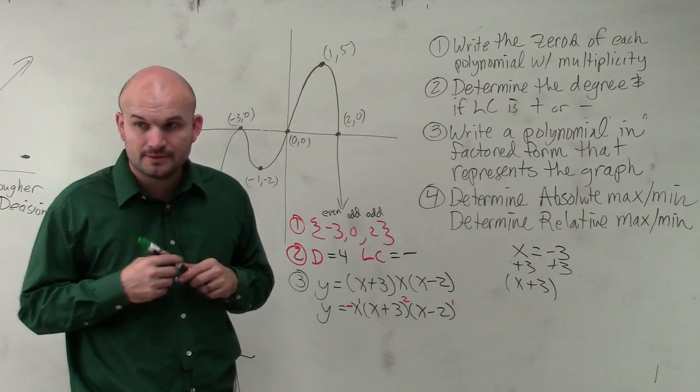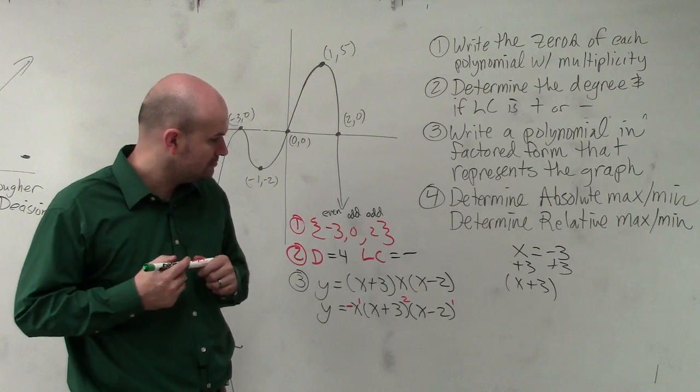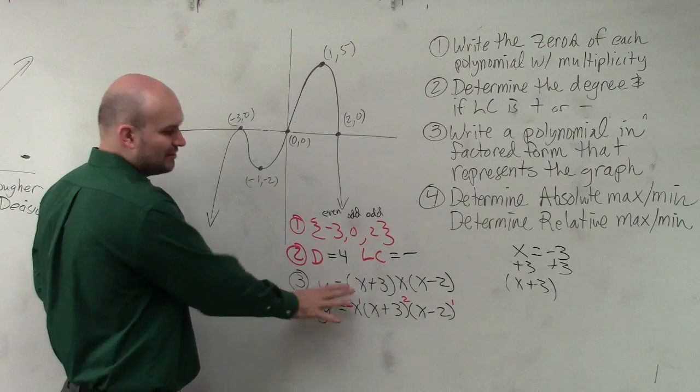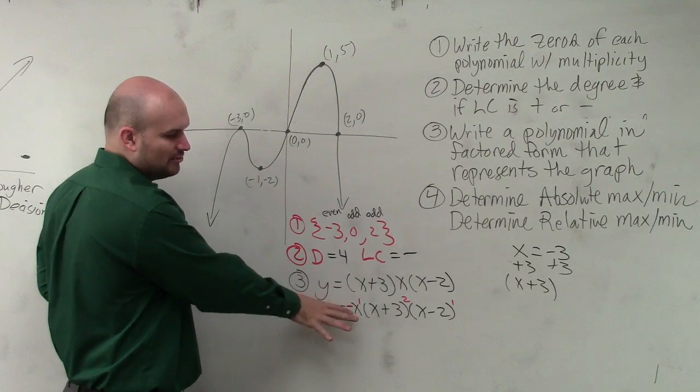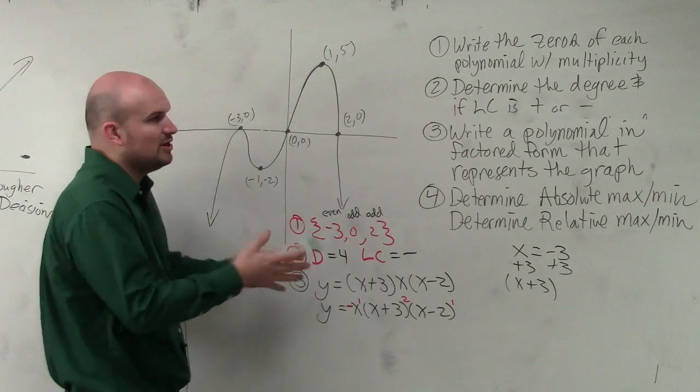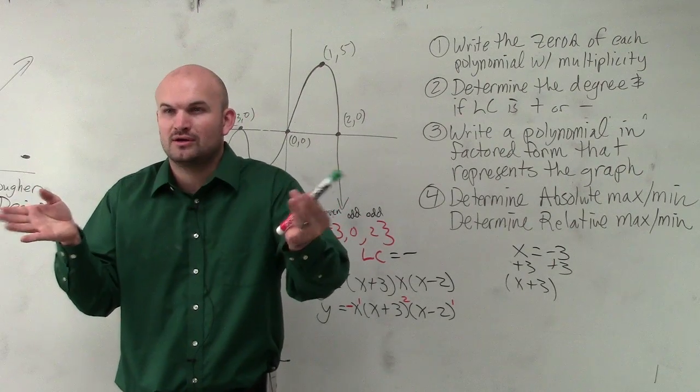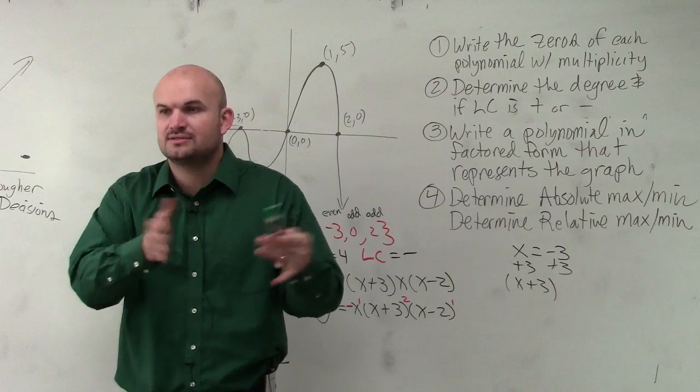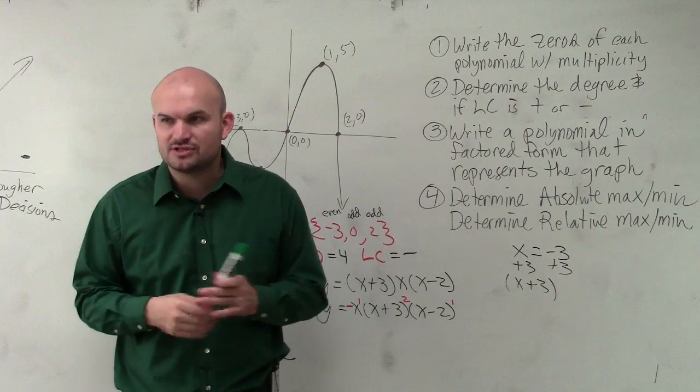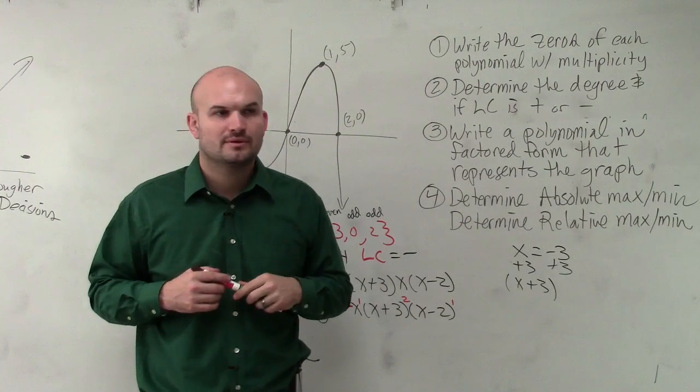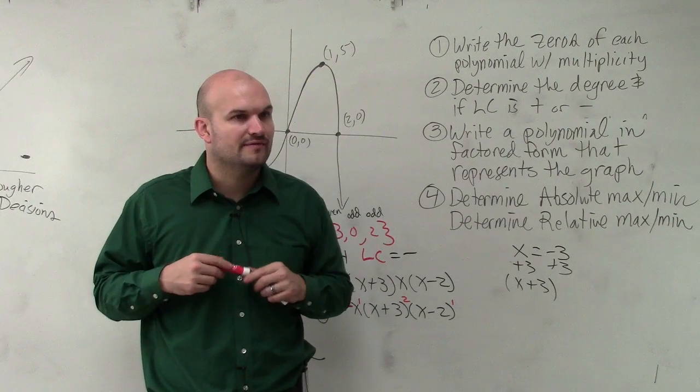Doesn't that change the sign? Well I mean you could distribute it, but you're just multiplying the whole polynomial. When you multiply a whole polynomial times negative, it's like saying negative 3 times 4. You can just make that first term negative. You're not distributing the negative to everything. Anybody have any other questions?